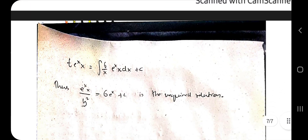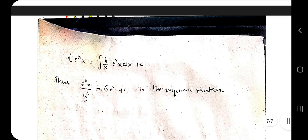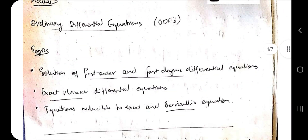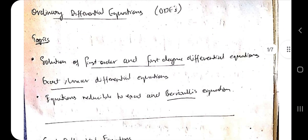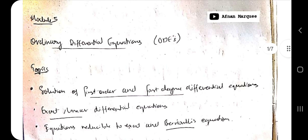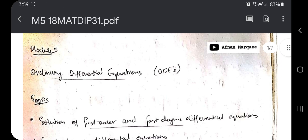The final answer is always of the form: t times e-to-the-power integral of P dx equals the integral of Q times e-to-the-power of P dx, plus c. Substitute the values and find the final answer. These are the two important types of questions in this module: the solution of first-order linear differential equations using the exact and reducible-to-exact methods, and Bernoulli's equation. That's all for this module — thank you for watching.